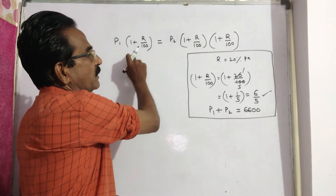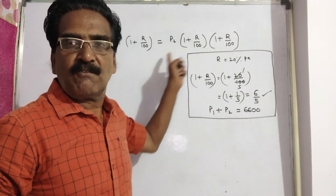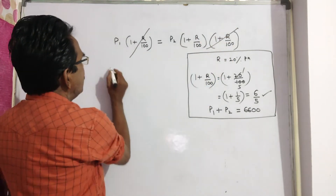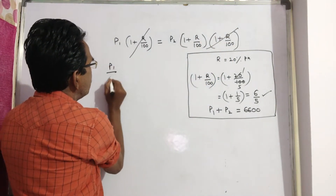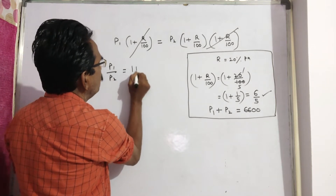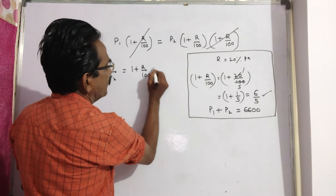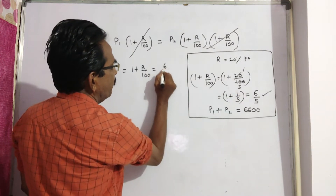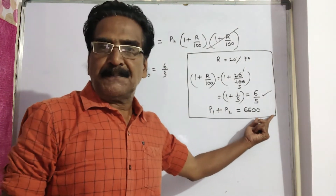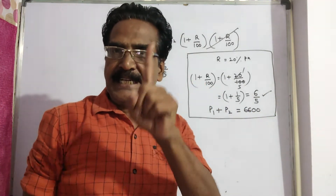These two are equal annual installments, so they cancel out. P1 to P2 is equal to 1 plus R by 100, which equals 6 by 5. Now let us divide P1 plus P2 in the ratio 6 is to 5, so that we can get P1.